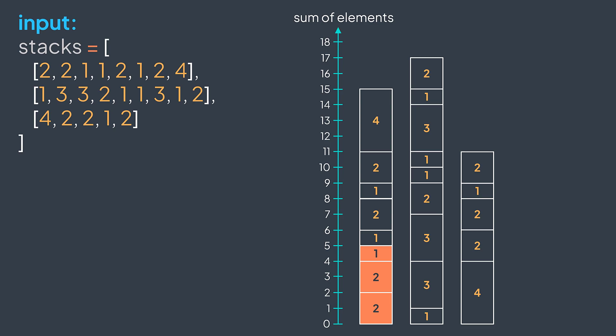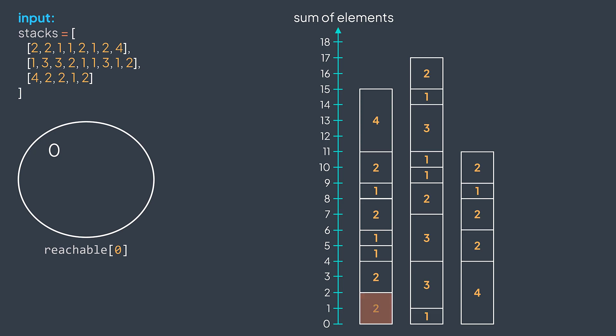So to calculate the next reachable sum, we just take the previous one and add the actual element. For example, for stack one, we have zero, then zero plus two we get two, then two plus two we get four, then four plus one we get five, then five plus one we get six, then six plus two we get eight, and so on: nine, eleven, fifteen.